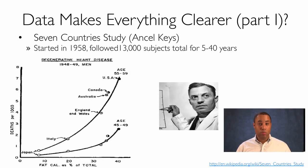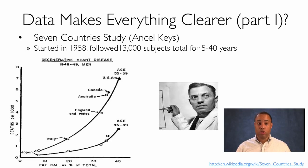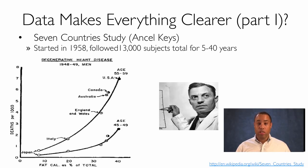This is a cautionary tale about performing data science. In 1958, Ancel Keys started the Seven Countries Study, where he followed 13,000 subjects for anywhere from 5 to 40 years. As part of this study, he produced a graph showing, on the x-axis, fat calories consumed as a percentage of total daily calories, and on the y-axis, deaths per 1,000 for degenerative heart disease, for men from 1948 to 1949. The graph appears to show a correlation between fat calories consumed and deaths from degenerative heart disease.